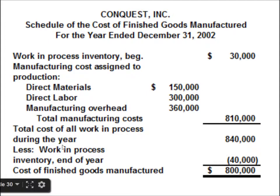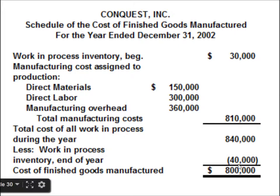Here is the management accounting report: Work In Process Inventory at the beginning is $30,000. Manufacturing costs assigned to production — Direct Material $150,000, Direct Labour $300,000, Manufacturing Overhead $360,000 — total manufacturing cost of $810,000. Adding $810,000 to the beginning $30,000 gives Total Cost of Work In Process during the year of $840,000. Deducting ending Work In Process Inventory of $40,000 gives Cost of Finished Goods Manufactured of $800,000.